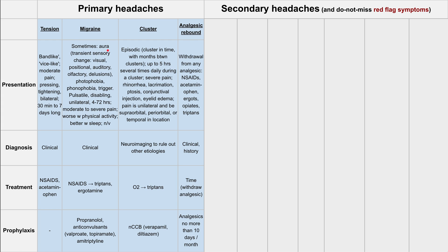During a cluster, when they have the pain, it's usually pretty severe and there are all these weird eye changes around it. They might get rhinorrhea, lacrimation, ptosis, conjunctival injection, or eyelid edema. The pain is usually unilateral and can be on the side of the face, or supraorbital, periorbital, or temporal in location.